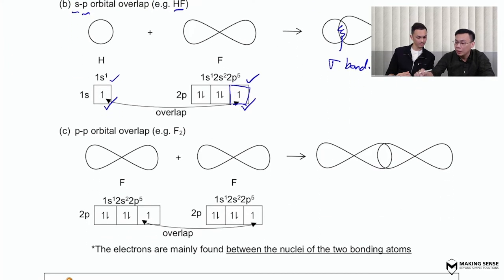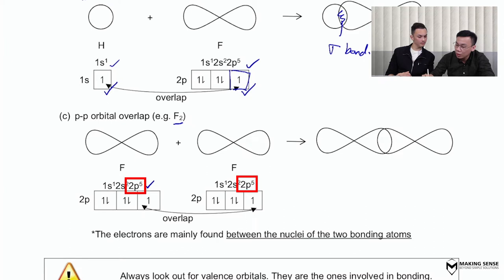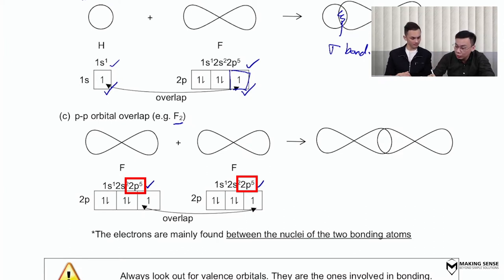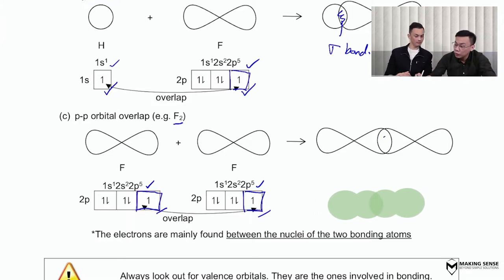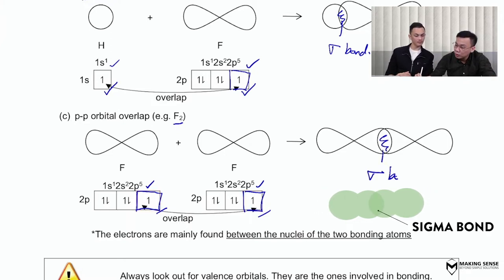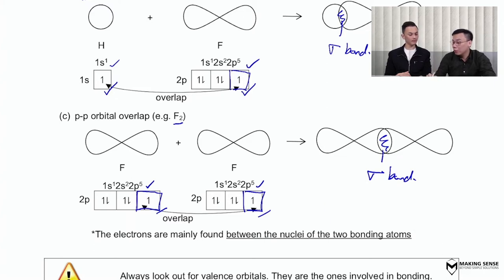Let's look at the F2 molecule. The electronic configuration is written down, focusing on the outermost orbital. This p orbital has an unpaired electron, and the other p orbital also has an unpaired electron. So they both overlap via a head-on car crash. The region of overlap is the sigma bond, formed by a p orbital and another p orbital — what we call a pp orbital overlap.